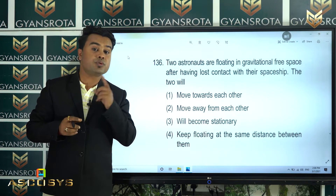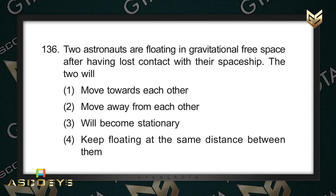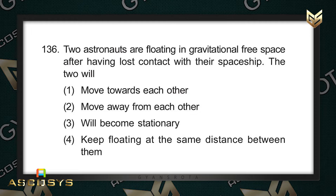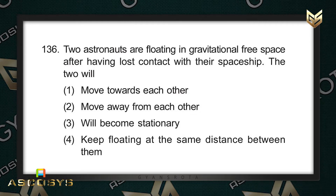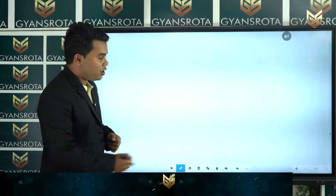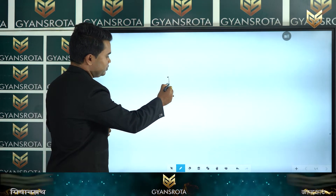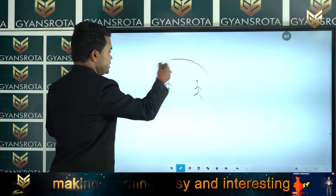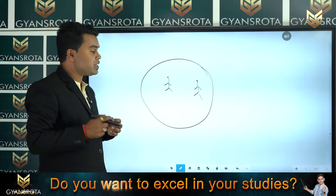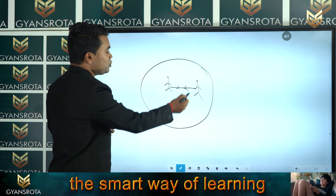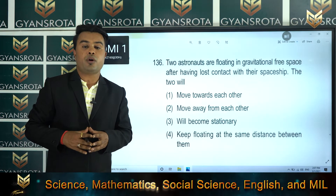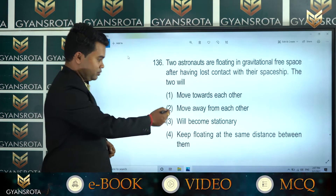Question number 136: Two astronauts are floating in gravitational-free space after having lost contact with their spaceship. What will they do? Option 1: move towards each other. Option 2: move away from each other. Option 3: become stationary. Option 4: keep floating at the same distance. In space there is no external gravitational force, so the only force between them is their mutual gravitational attraction. Therefore both will move towards each other. Option number 1 is the correct answer.